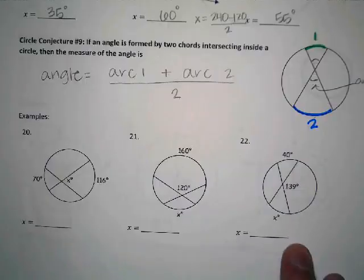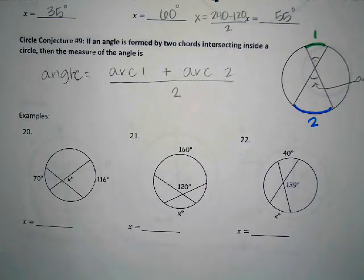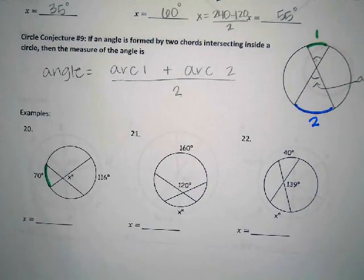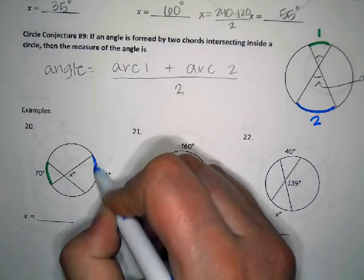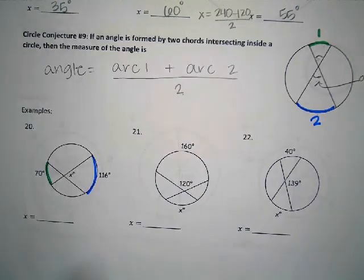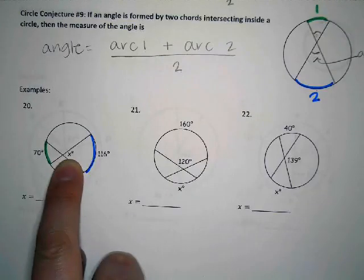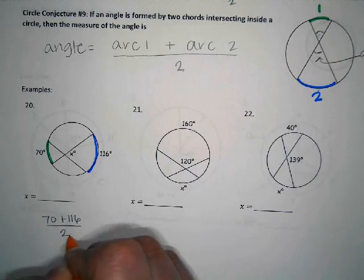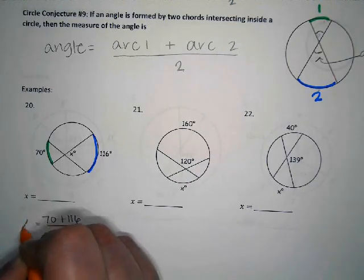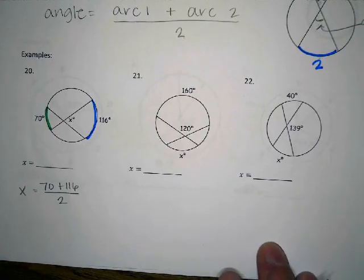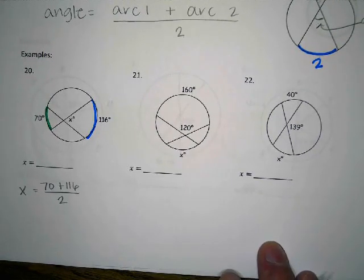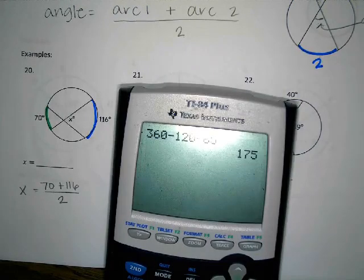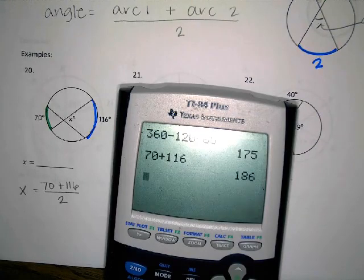On number 20, we have our two arcs - this arc over here and this arc over here - and the angle between them is X. We're going to take the two arcs, 70 and 116, add them together and divide by two to get the angle. 70 plus 116 is 186, divided by two is 93.